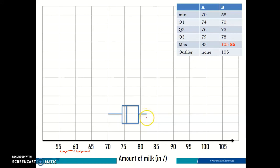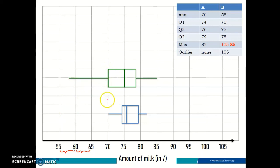Moving on, let's draw the box plot for Breed B. The minimum is 58, Q1 is 70, Q2 is 75, Q3 is 78, and the maximum is 85. Don't forget to also plot the outlier.